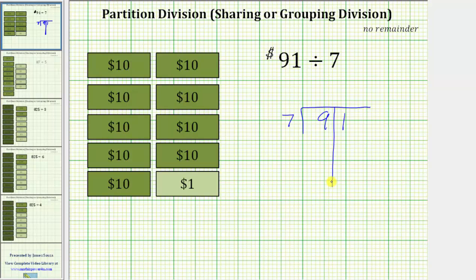To begin sharing, we first share the nine $10 bills among the seven friends. And because we have nine $10 bills, we know each friend will receive one $10 bill. We record a one in the tens place value of the quotient or above the nine representing the nine $10 bills.